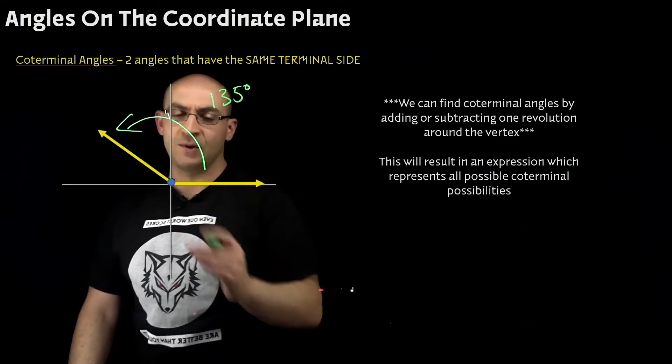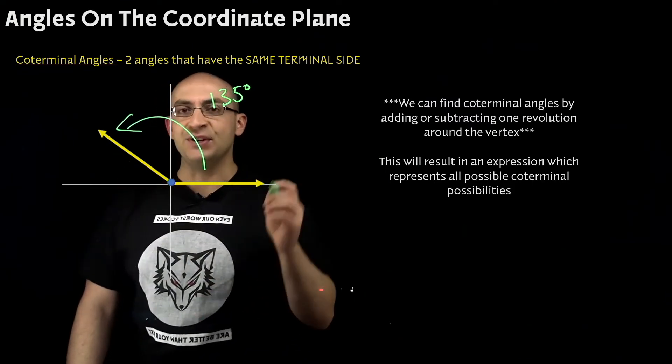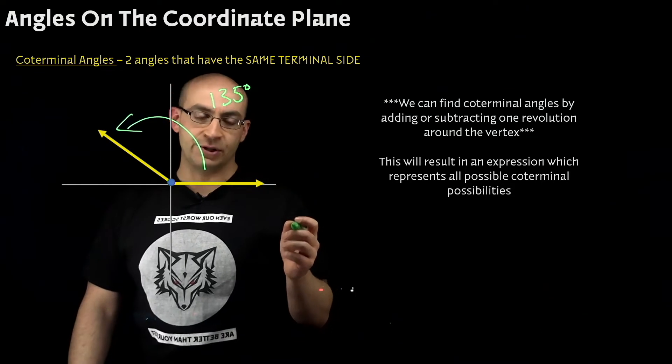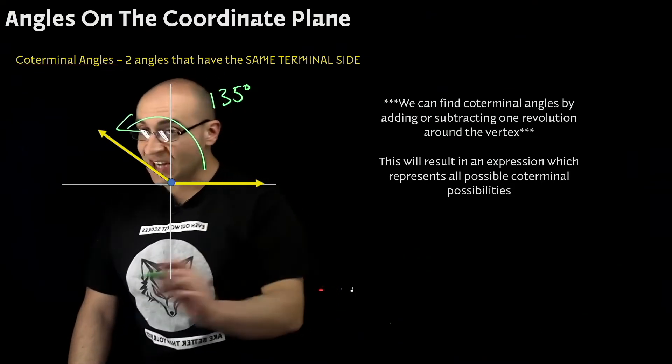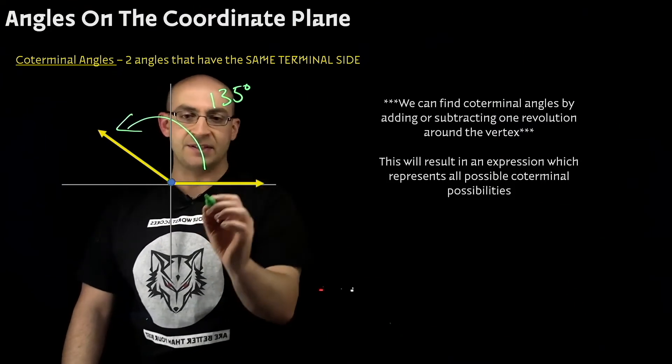Positive because this is the way the positive angles work. Its coterminal angle needs to be the difference of one revolution. So if the entire revolution around is 360 degrees and 135 is taken up by going to the positive side,